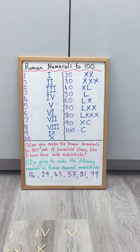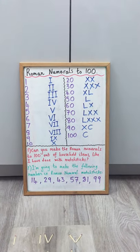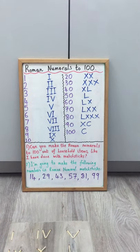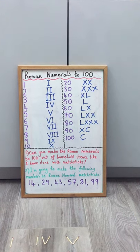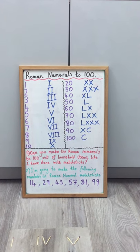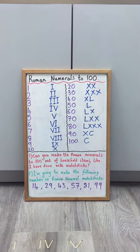I think I'm going to leave the final three numbers for you to make so if you can try and make 57, 81 and 99 from household items that would be absolutely brilliant and I'll also be uploading a worksheet all about Roman numerals to 100 for you guys to have a go at. Good luck! I'll see you in the next one.